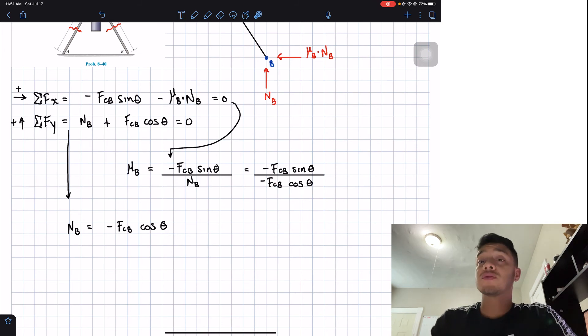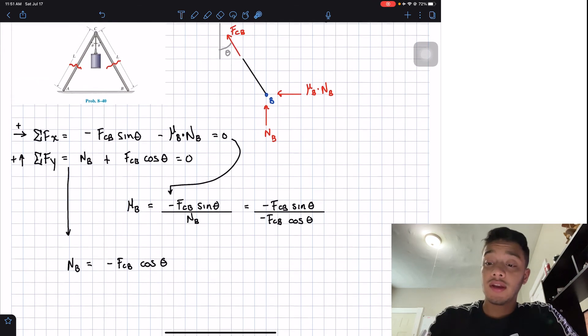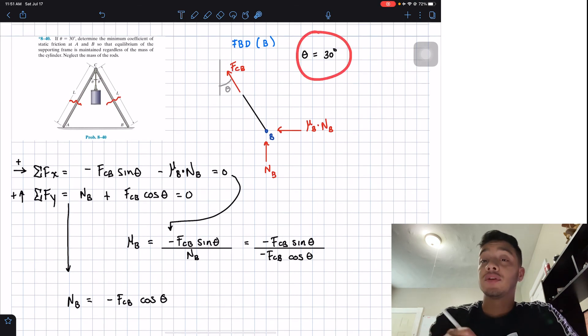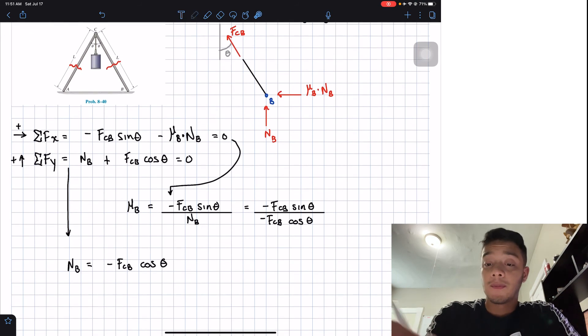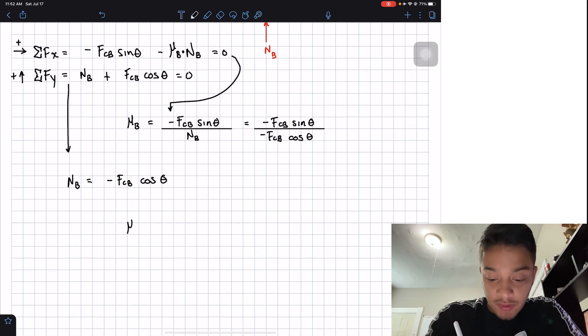We will end up that mu's of B is only sine of theta divided by cosine of theta. Do we know theta? Yes, we know theta. Theta is equal to 30 degrees. So we're going to plug this into our calculator.